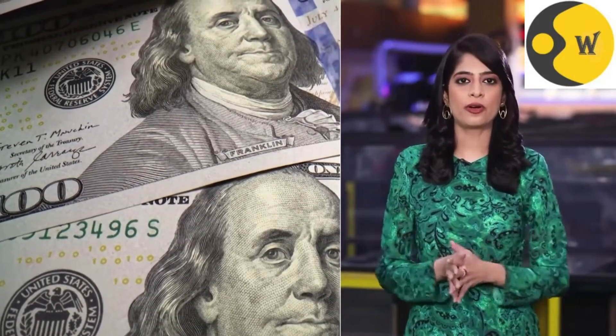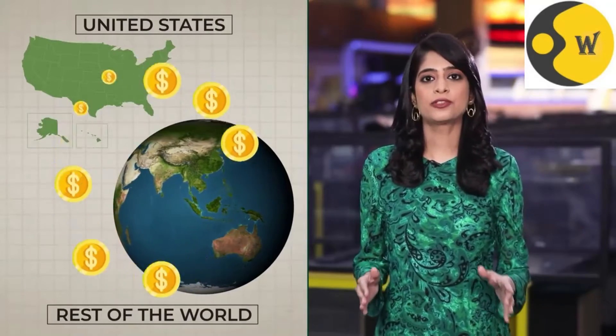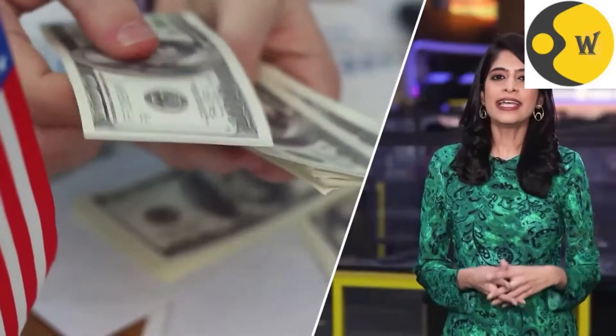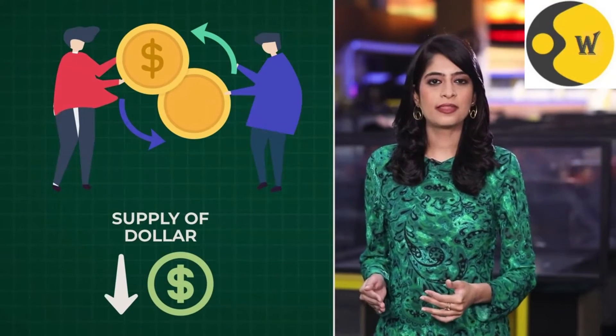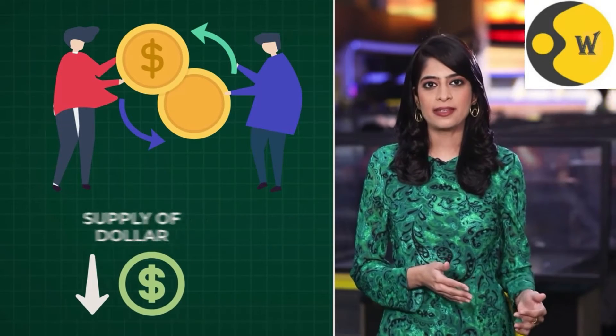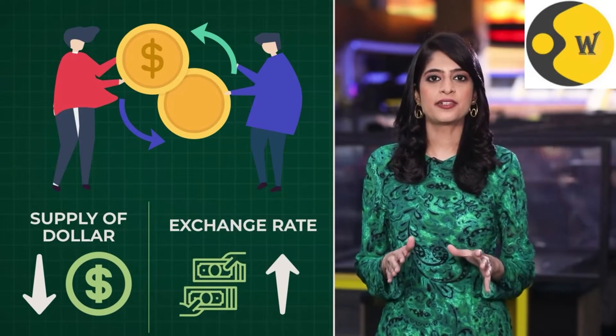Investment to a great extent determines the value of your currency. When investments are pulled out, it leads to a currency crunch. Currently, investors are pulling out dollars from countries around the world, including India. This reduces the circulation of dollars, making it difficult for countries like India that pay for their foreign trade in dollars. While the supply of US dollars falls, the demand to pay for trade in US dollars remains. The disparity results in a rise in the exchange rate, which is also why the value of the Indian rupee is falling vis-à-vis the dollar.